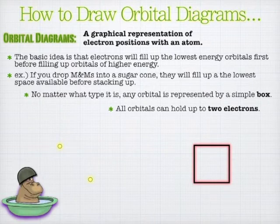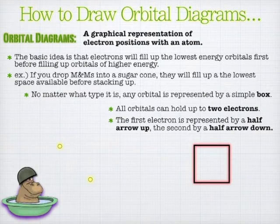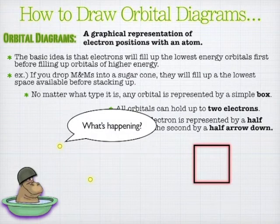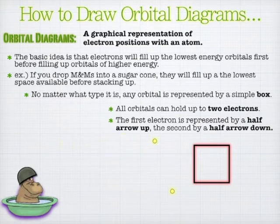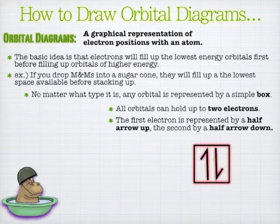We will represent electrons by either up arrows or down arrows to represent the two spins. The first arrow is always a spin up with a top up arrow and the other one's a half arrow down. You'll see why we do half arrows in a second here. It's much easier to write a half arrow than a full arrow.